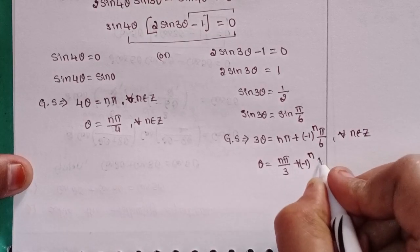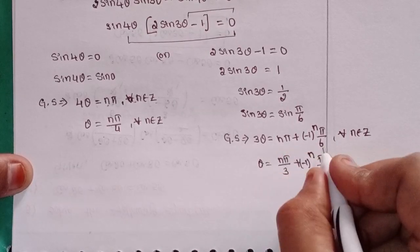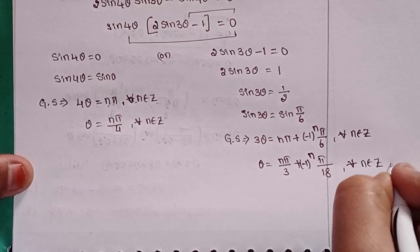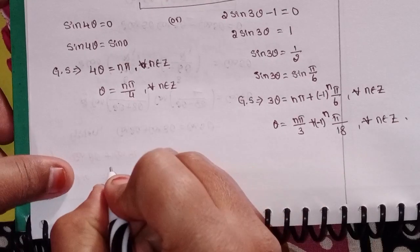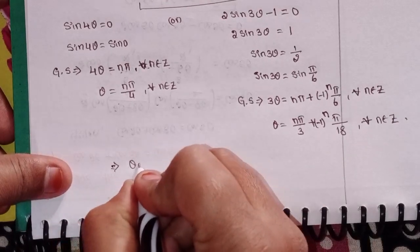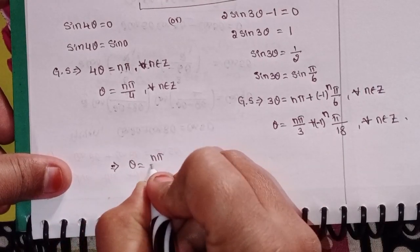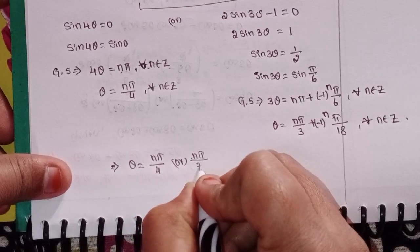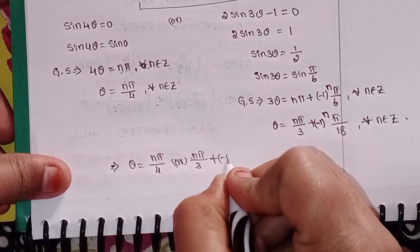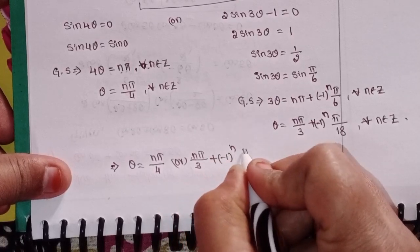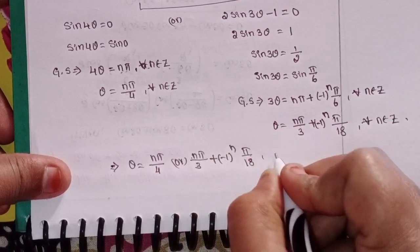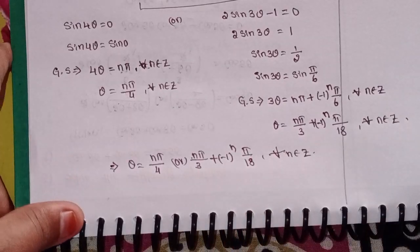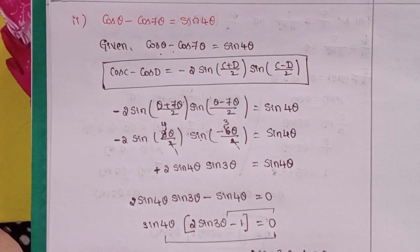Therefore θ = nπ/3 + (-1)^n · π/18, for all n belonging to Z. So the solutions are θ = nπ/4 or θ = nπ/3 + (-1)^n · π/18, for all n belonging to Z. This is the second solution.